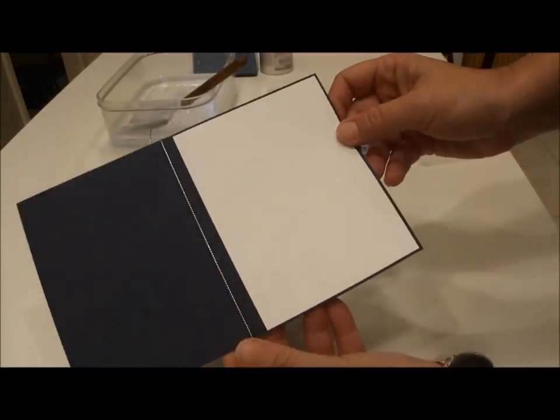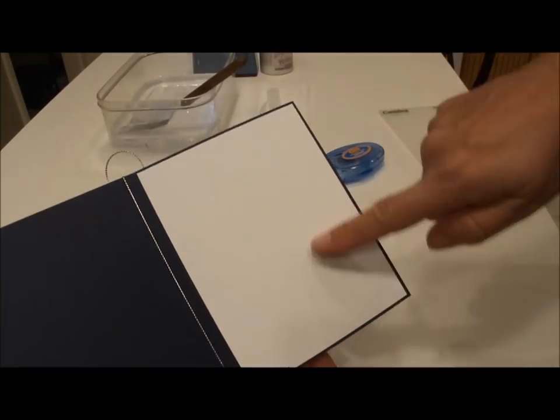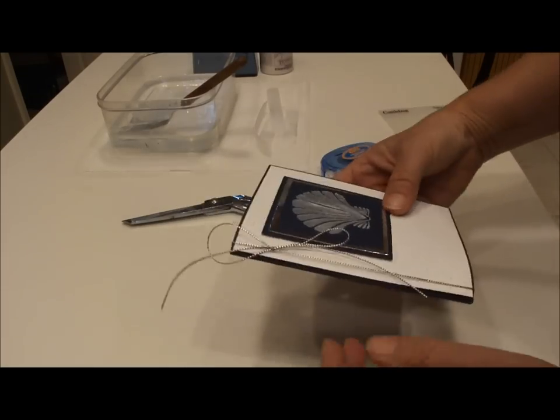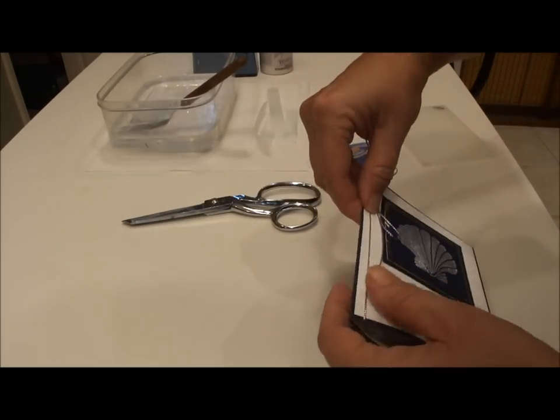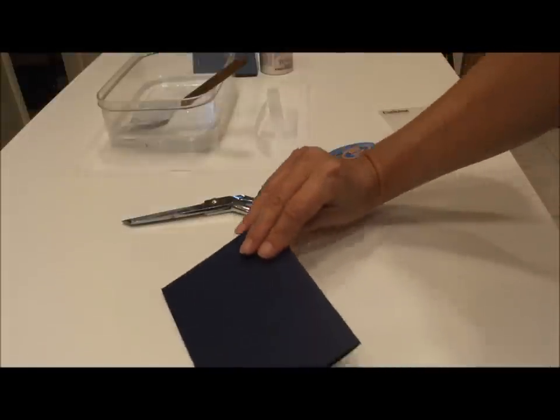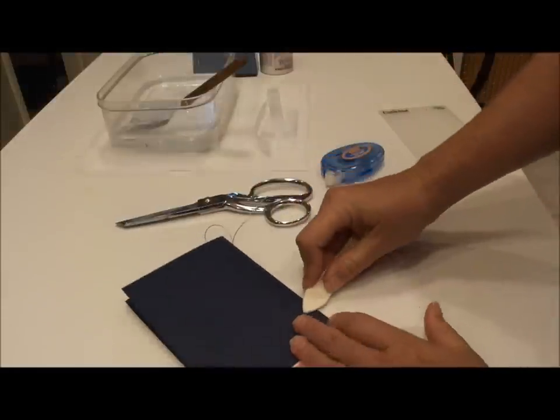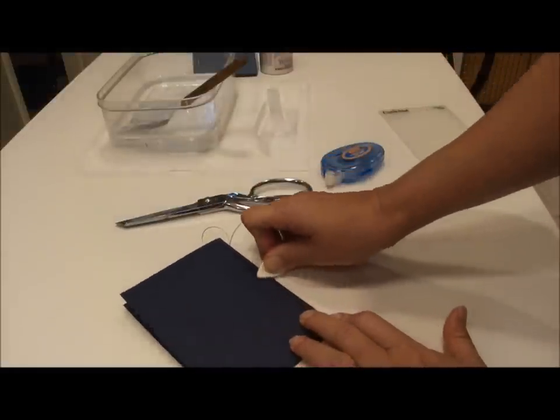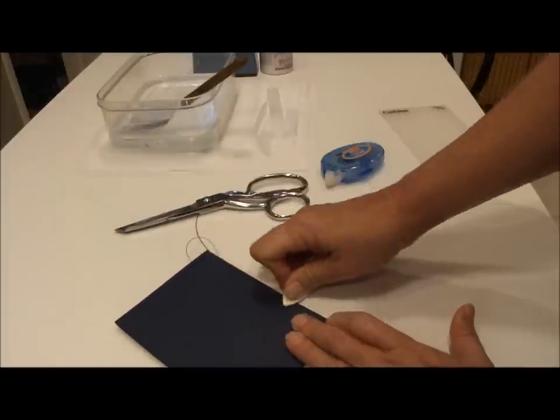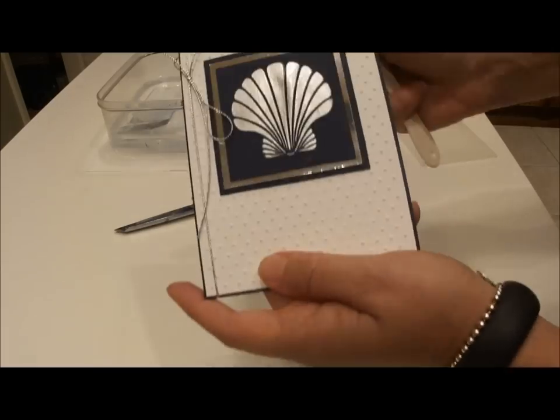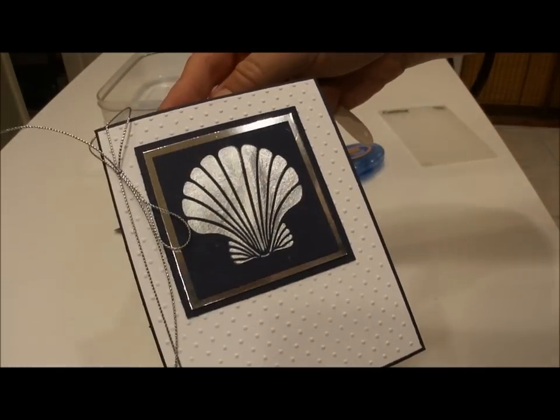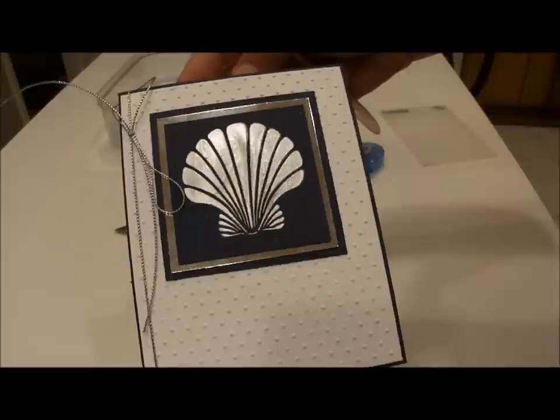And the inside of the card has the white for your message or your note. And now I'm just going to fold it and this card will be complete. Now I'll use the bone folder just on the very edge. And there you have it. Thanks for watching.